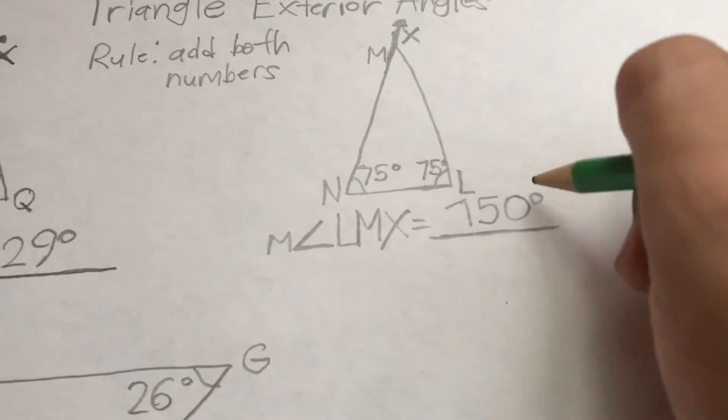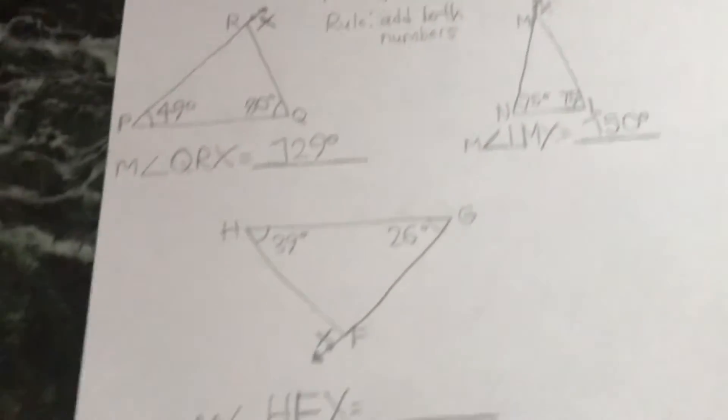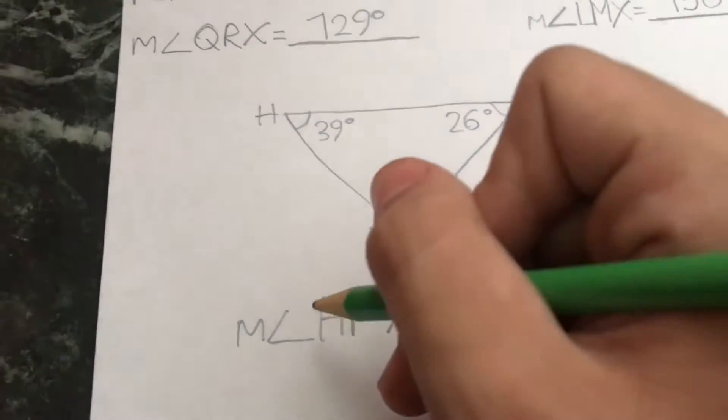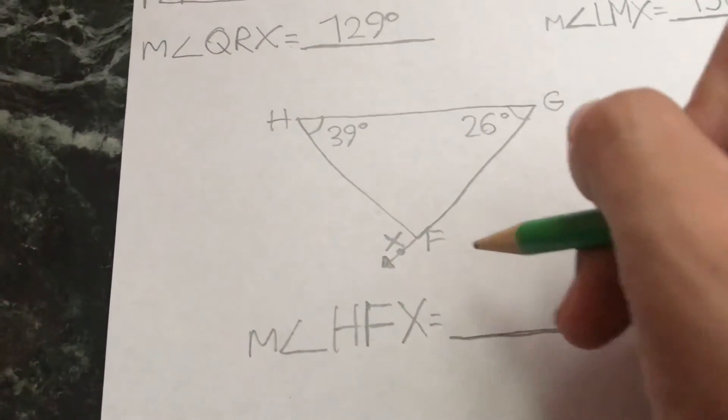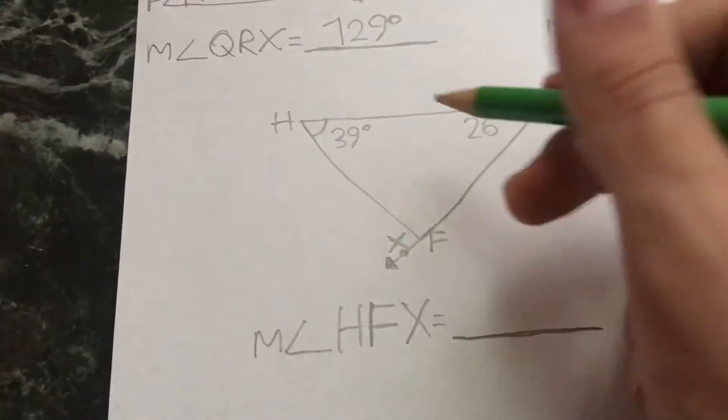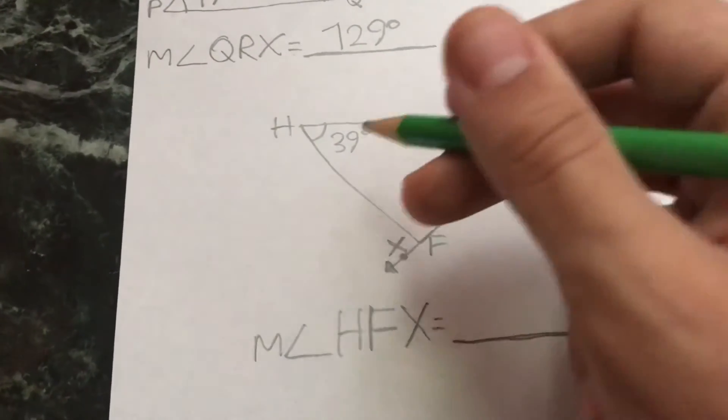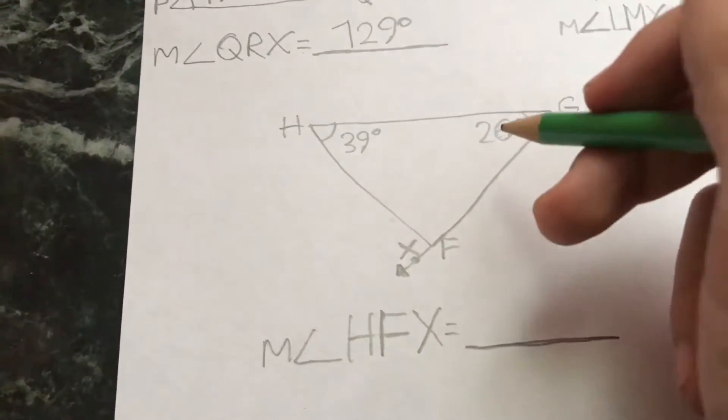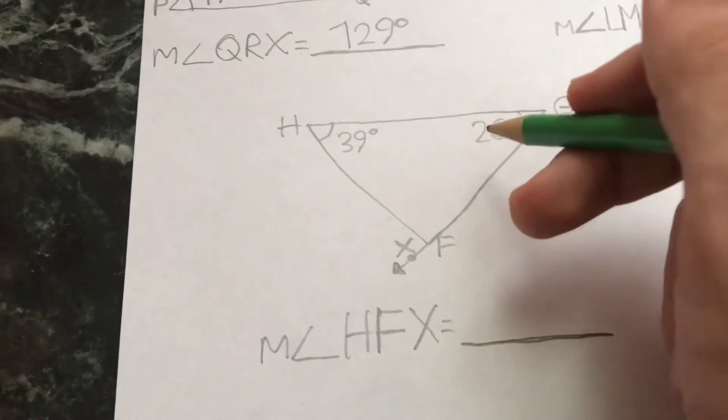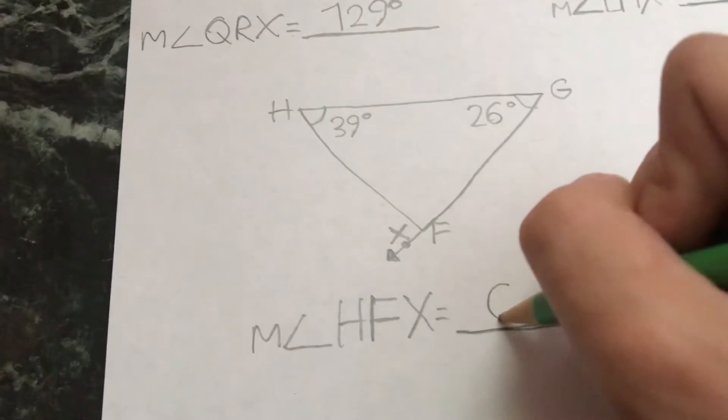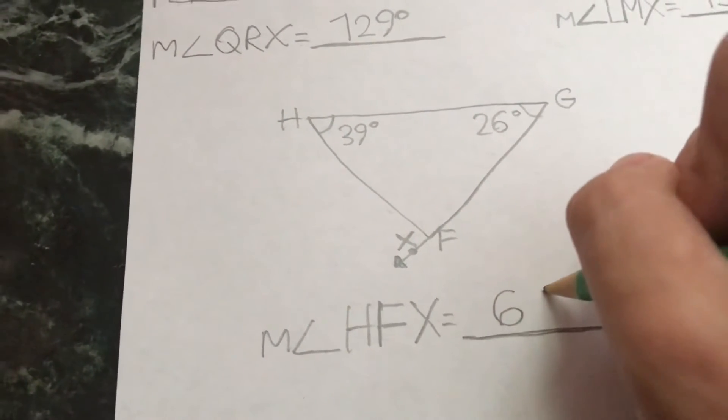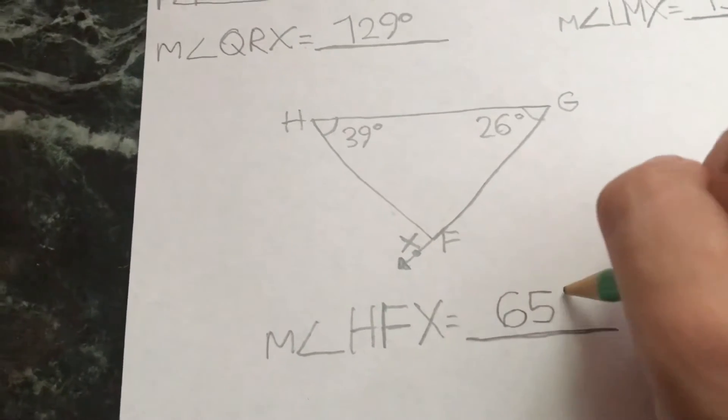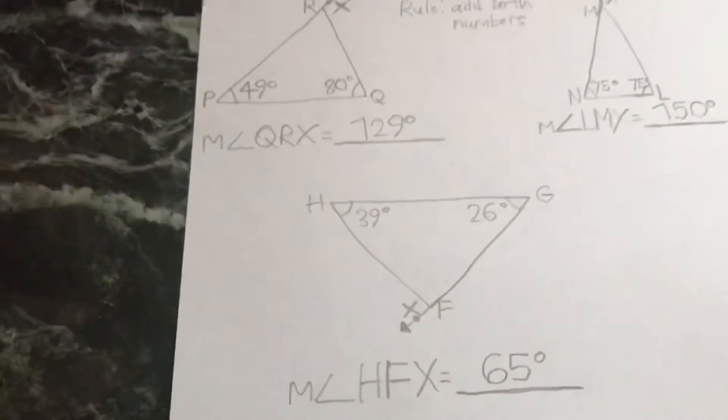And here, HFX - again with those two numbers here, 39 and 26, you add them. So 39 plus 26 equals 65. All right, now I'm going to explain to you a bit about this lesson.